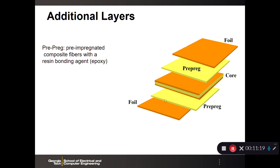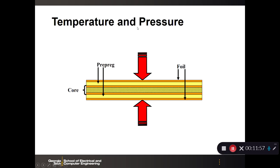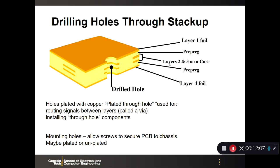As the complexity of the printed circuit board grows and you have more components and a complex interconnection scheme, you start with the core in the center and add layers or foils of additional copper on top. Between the core and these foil layers is what's called prepreg — pre-impregnated composite fibers with a resin bonding agent, basically epoxy. Prepreg bonds the foils to the core, and you add more copper foil through temperature and pressure to build up the stack.